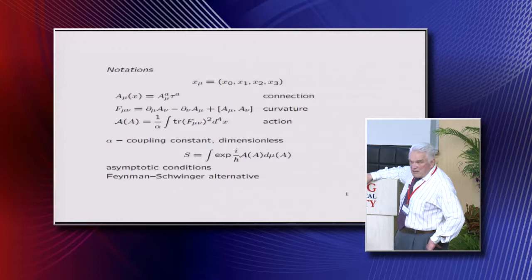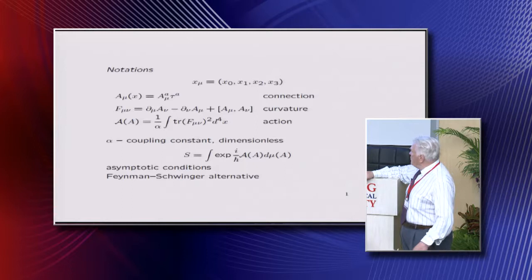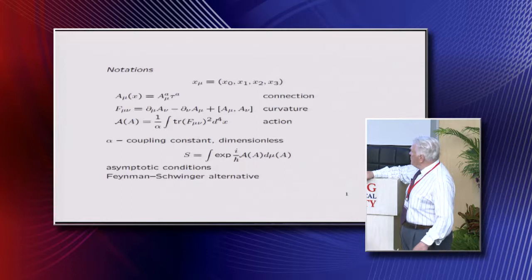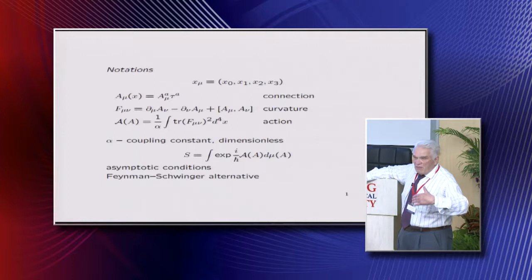So we have to investigate the functional integral where you integrate over fields, including these fictitious particles and so on. And the main thing in Feynman's idea was that you are to integrate over fields A which has some prescribed asymptotics at minus and plus infinity in time. And so the functional will be function of these asymptotic fields.